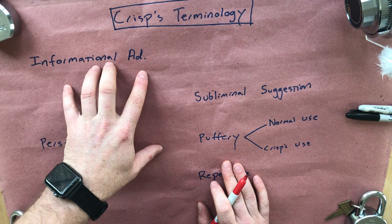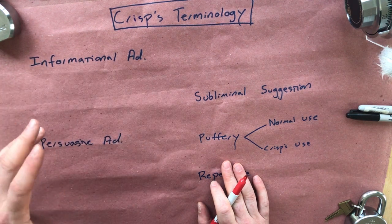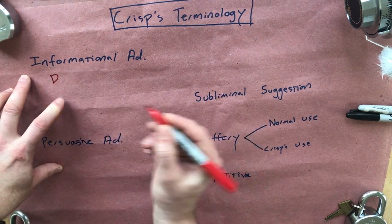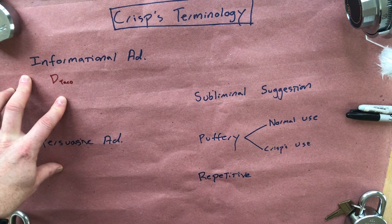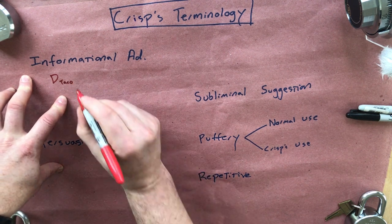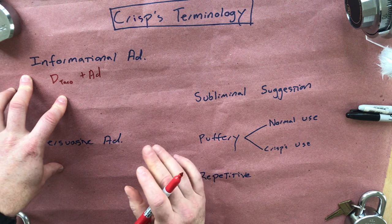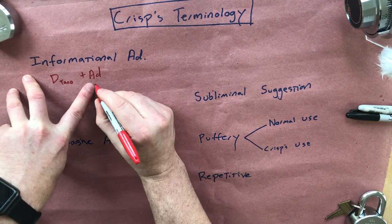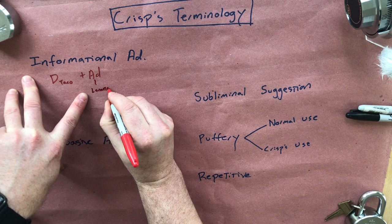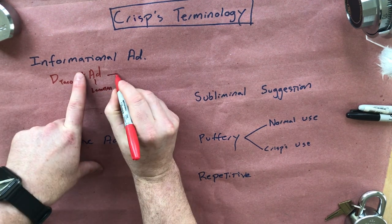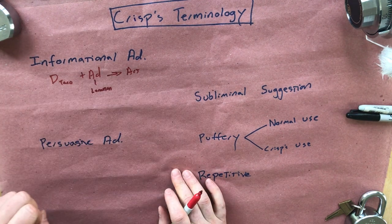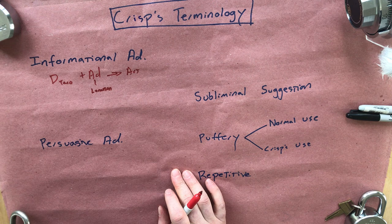The first is informational advertising, and that's the kind that he's generally speaking okay with. The idea is that you have some sort of desire — so you want to have a taco, but you don't know where to get it. You see the ad. The ad tells you there are tacos at the corner of Lancashire and Burbank. Now you know the means to satisfy your desire, so you act — you go and you get the taco. That's generally speaking fine, although if you look on the last page of the article, you'll see there are some caveats.